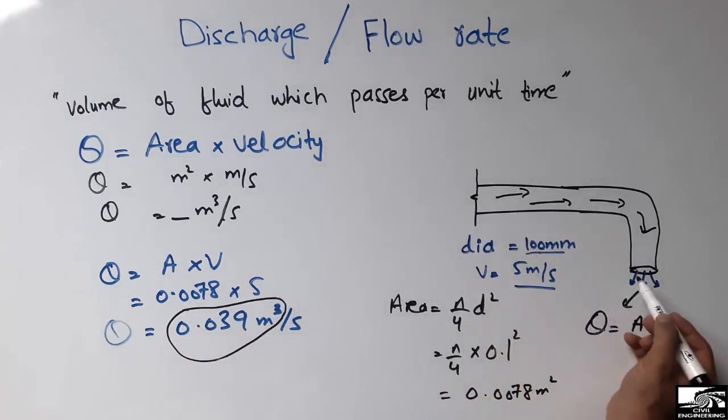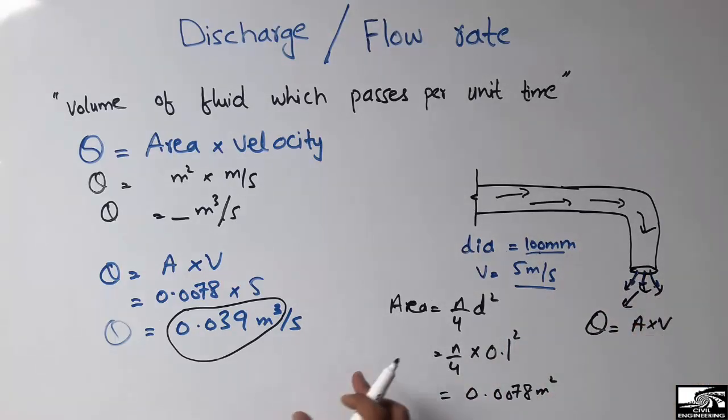You can see here the outward flow - the flow rate in this pipe will be 0.039 cubic meters of water flowing per second in this pipe. Hope you guys understand how to calculate the discharge in any pipe with the known dimension and velocity.